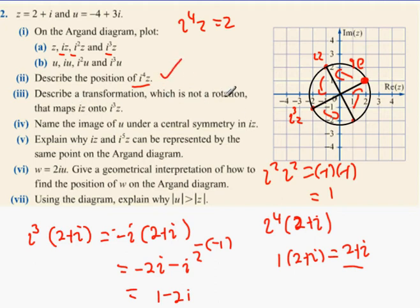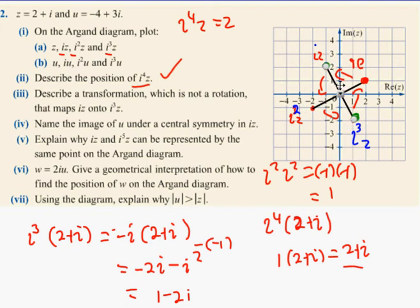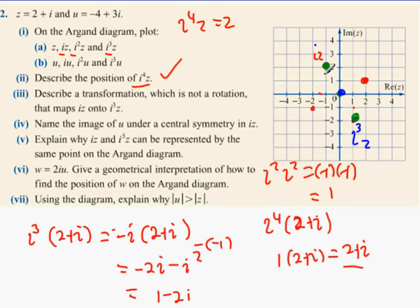Describe a transformation, which is not a rotation, that maps IZ onto I³Z. So IZ is this one here, and I³Z is this one here. I want you to describe a transformation that maps this one onto this one here. What matches the two green dots onto each other — well, you can say it's central symmetry in the origin, because if you go down two across one, down two across one, it's what's called central symmetry.